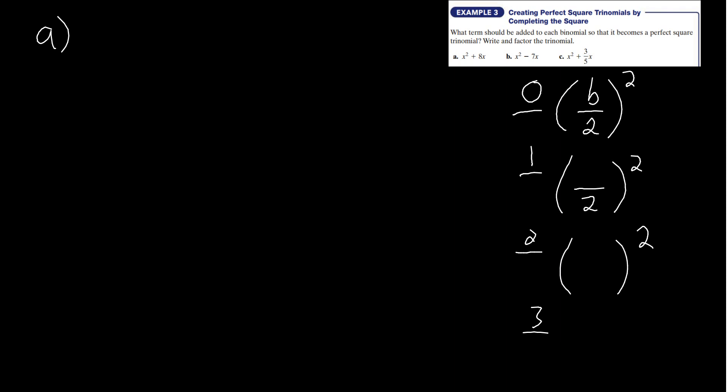When I teach completing the square, I always have 4 steps. The zeroth step is just the formula: b over 2, quantity squared. In step 1, I write the formula but leave the b blank because I'm substituting the b in. In step 2, I don't put the half in there because I'm dividing by 2. In step 3, I leave blank because I'm doing the squaring.